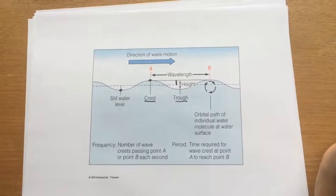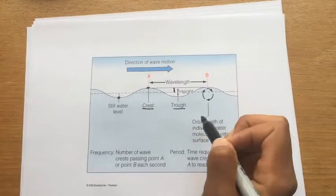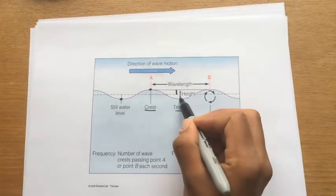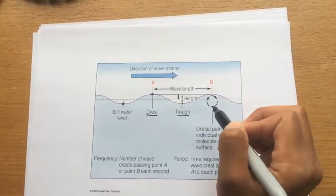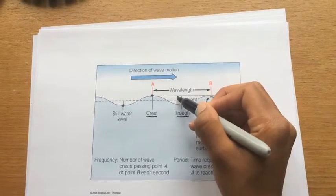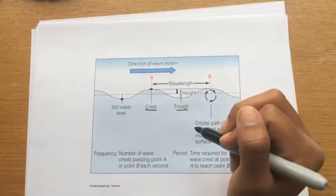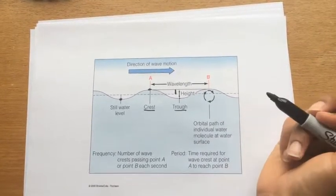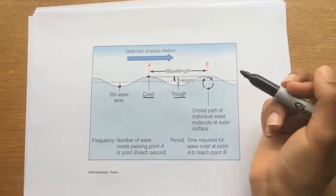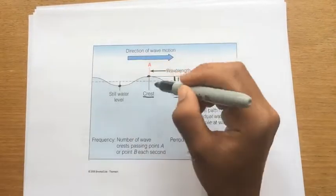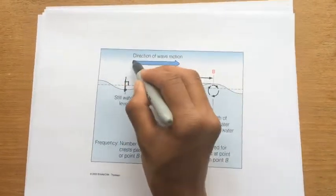Before I can start talking about tsunamis I just need to talk about normal ocean waves. These are all the different parts of a wave: at the bottom is a trough, at the top is a crest. From crest to crest is a wavelength. The height, another word for this, would be the amplitude. There are two different types of waves — transverse waves and longitudinal waves. Ocean waves, just like electromagnetic waves, are transverse waves where the particles oscillate perpendicular to the direction of the wave.